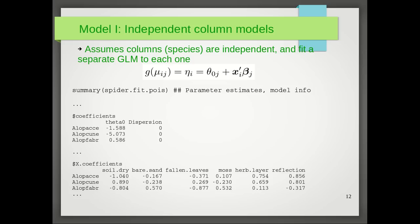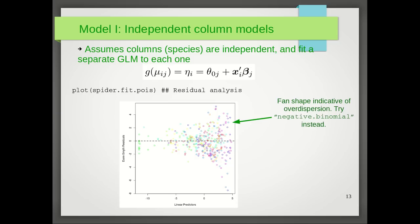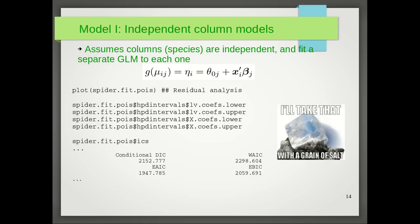Once you've fit this model, you can apply summary to obtain parameter estimates and other model information. For example, you obtain the posterior medians of the species-specific intercepts and the species-specific regression coefficients. If you want to do residual analysis, you can use the plot function, and this will return a series of plots, and one of these plots is residuals versus linear predictors plot. In this plot here, we can see there is a very prominent fan shape which is indicative of overdispersion, and this suggests that you should perhaps try the negative binomial family instead. You can also obtain the HPD intervals, which are 95% credible intervals, and you can also obtain information criteria.